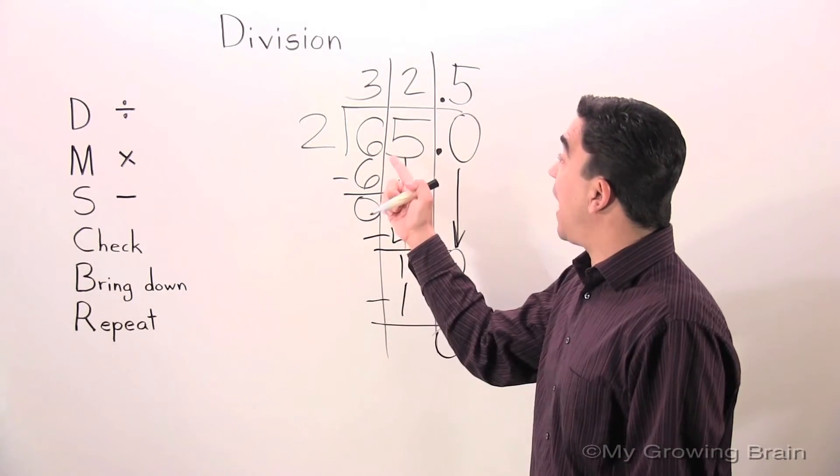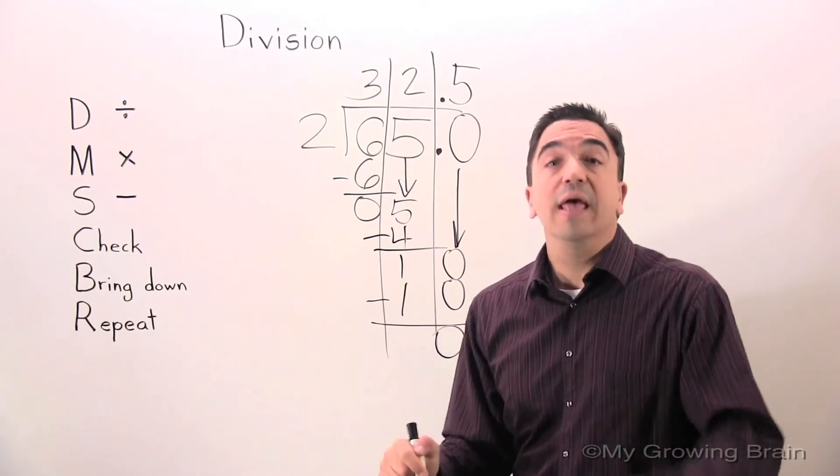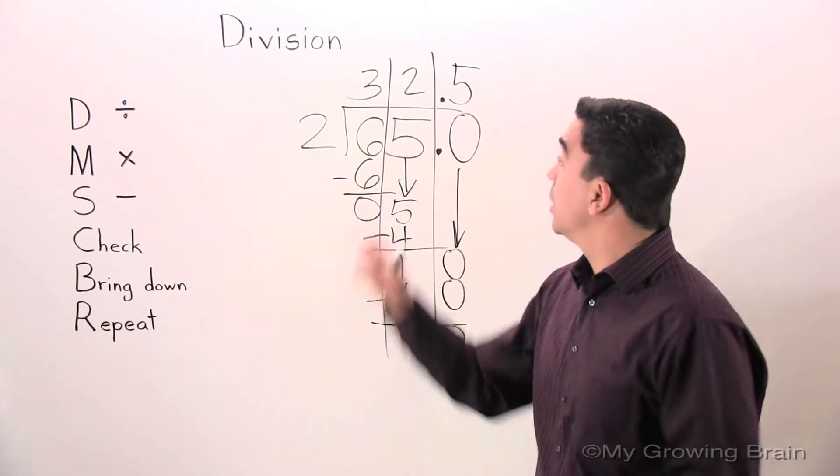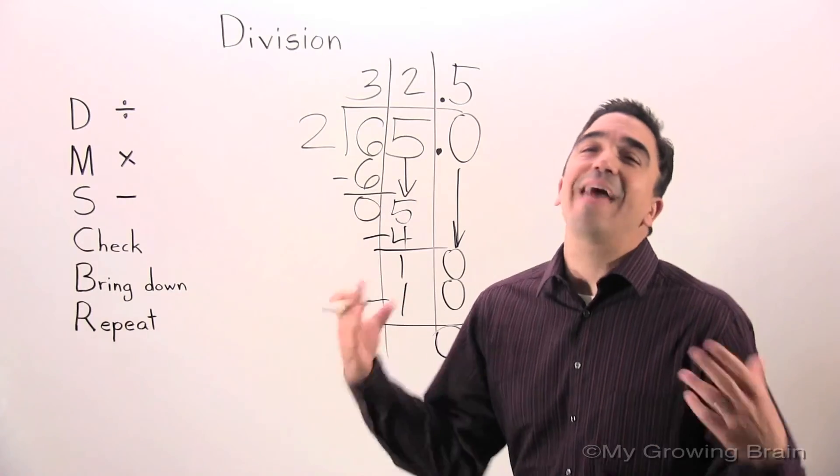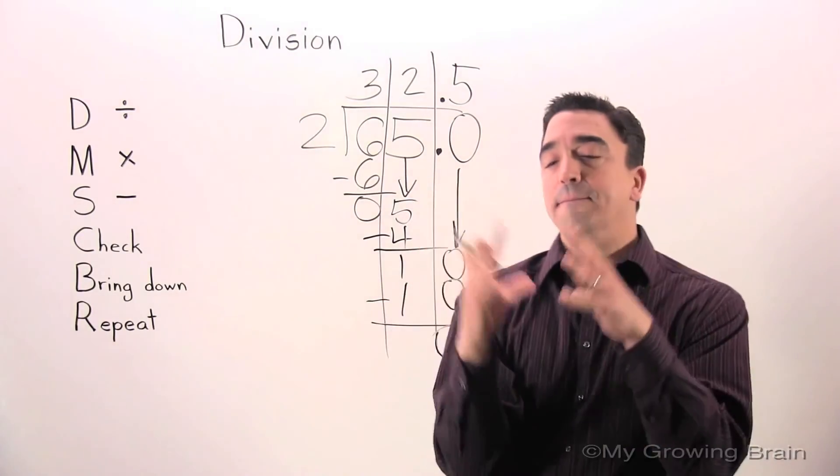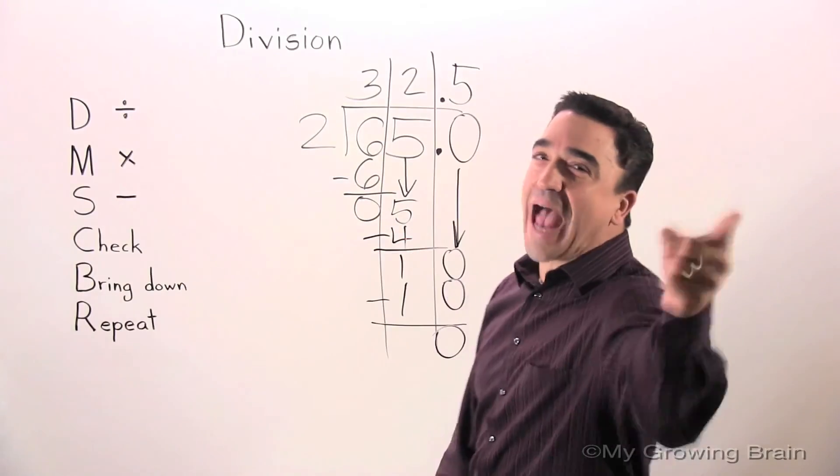Therefore, 65 divided by 2 gives us a quotient of 32.5, or 32 and 5 tenths. That concludes our lesson on Division. Coach Mike at Mind Growing Brain Challenge Yourself.